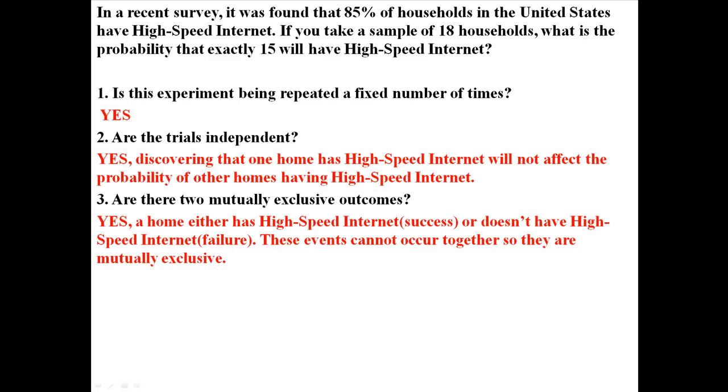Are there two mutually exclusive outcomes? Yes. A home either has internet, which is a success, or it doesn't have it, which is a failure. These events also cannot occur at the same time, like a house can't have it and also not have it. So that means these events are mutually exclusive.